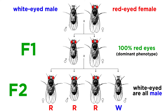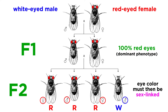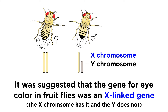White eyes showed up only in males. All the F2 females had red eyes, and half the F2 males had red while half had white. This was firm evidence that eye color was linked to sex, which makes perfect sense considering the discrepancy in sex chromosomes for males and females. It was suggested that the gene for eye color in fruit flies was an X-linked gene.